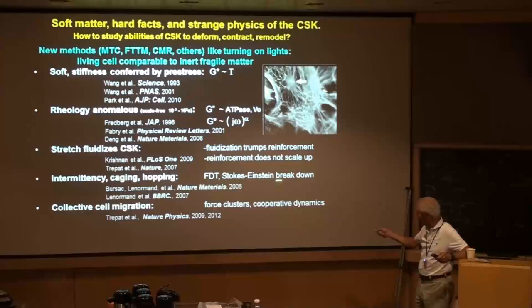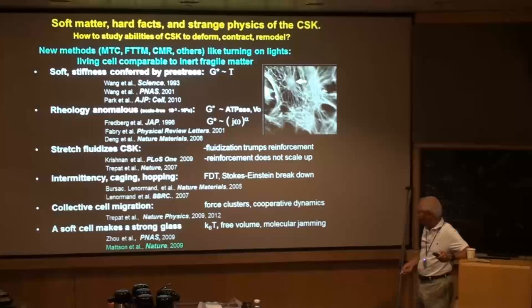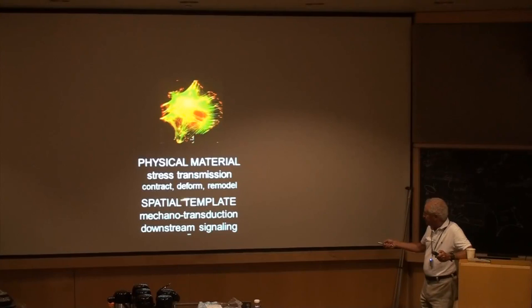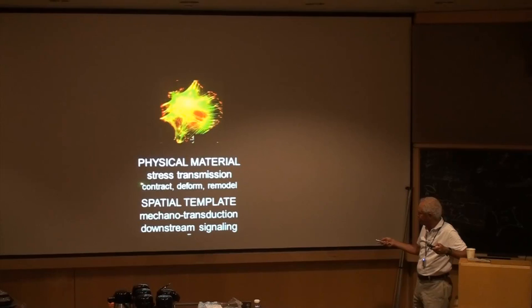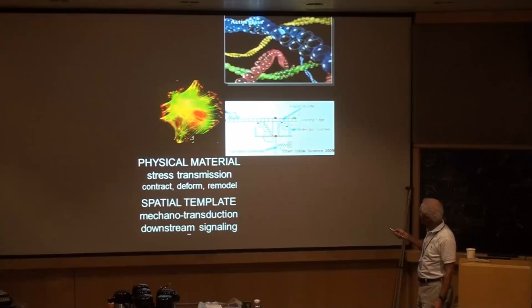To recap: we can think about the cytoskeleton as a spatial template for mechanotransduction downstream signaling, or we can think about it as a material for stress transmission that can contract, form, and remodel. There's an important paper by Chan and Odie looking at how cells spread and move, where bonds form and break at the leading edge — related to fragility and motility. The system has on-and-off springs that can dissipate energy.